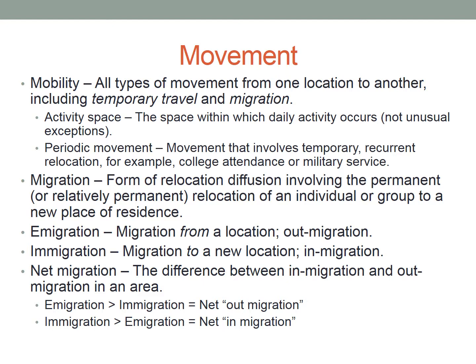We also talk about periodic movement, which is movement that involves temporary but recurrent relocation. Examples include college attendance and military service. Another example is snowbirds — typically older, wealthier residents of Canada and northern U.S. states who move to the Sun Belt — Florida, Arizona, southern Nevada — for warmer weather during the winter months. They stay there for a temporary but recurrent period of time. If the move were permanent, we would call that migration.